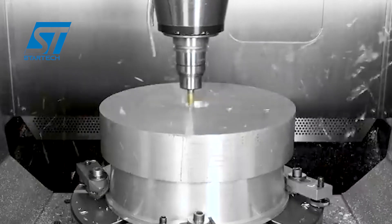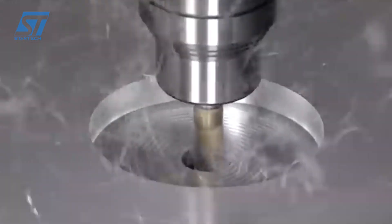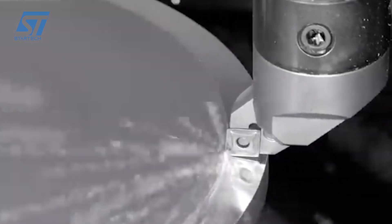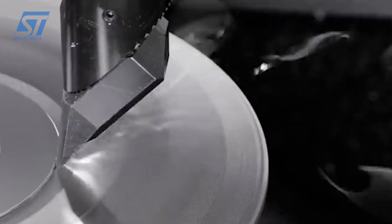It all starts with a detailed 3D model of the rim, likely created in CAD software like SolidWorks or similar. The 3D model is imported into SolidCam, a powerful CAM software that translates the design into instructions for CNC machines.